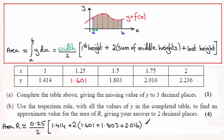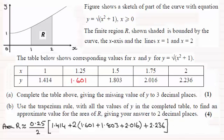Close the bracket there, and then it's plus the last height, 2.236. And so that's our trapezium rule for working out the area r. So it's just a question of getting on your calculator and working this out, and you should find you get 1.81125. But we're asked to give this to two decimal places. So to two decimal places, the area r is 1.81.